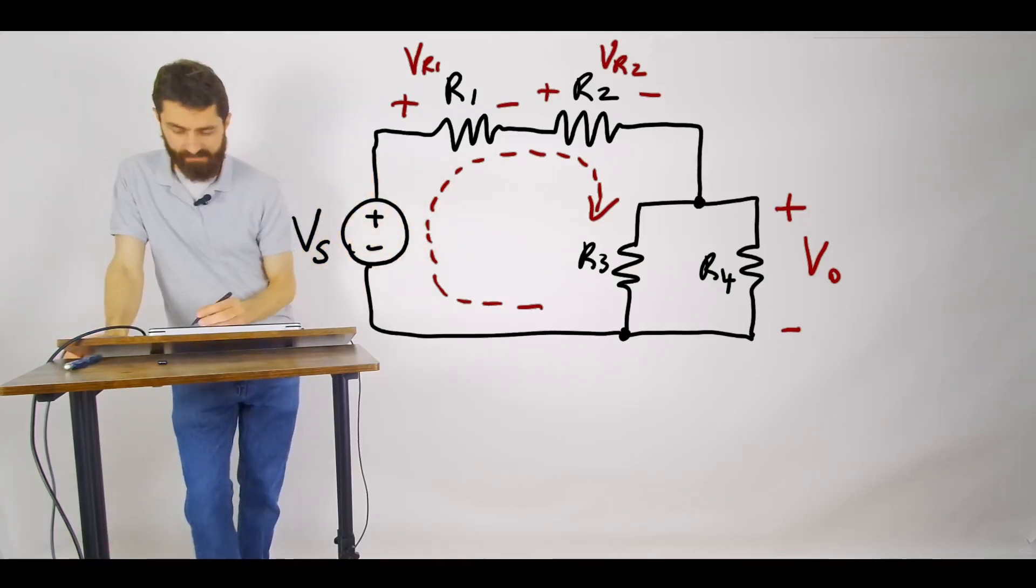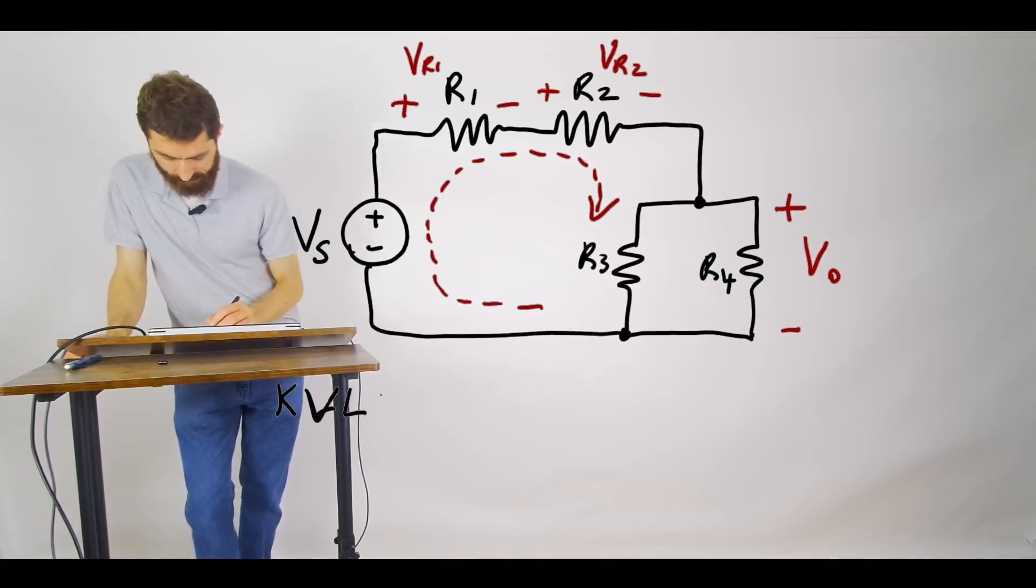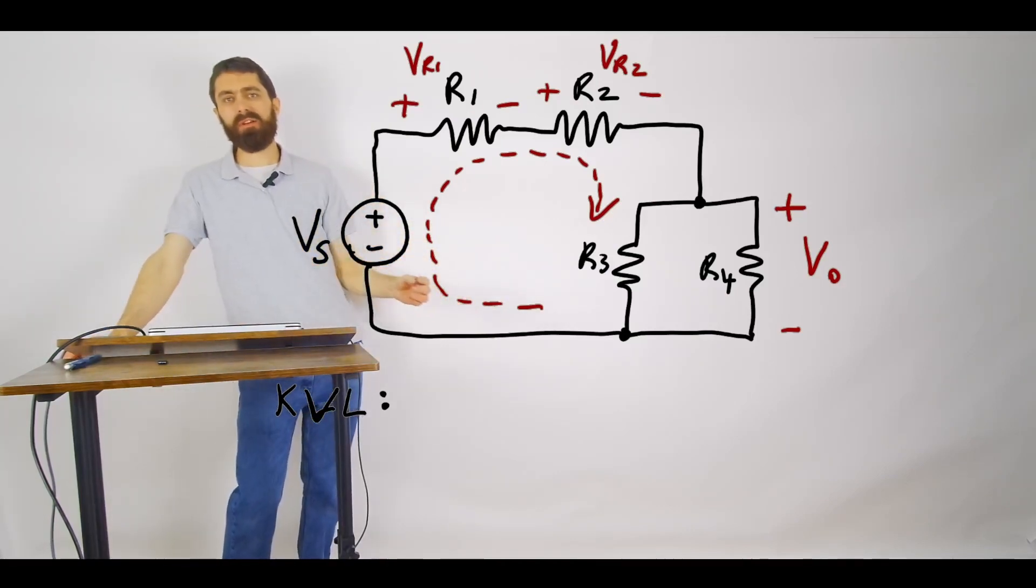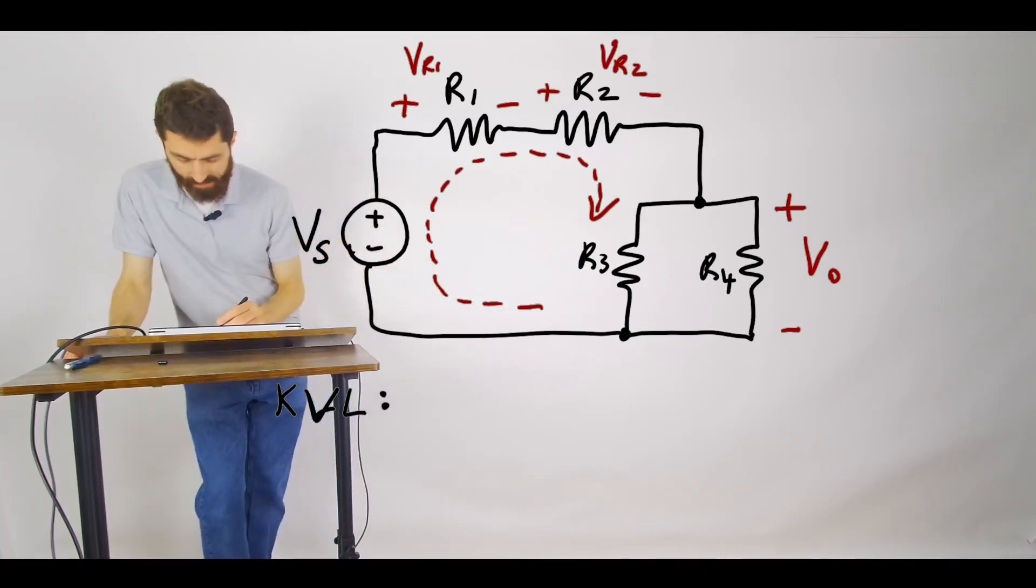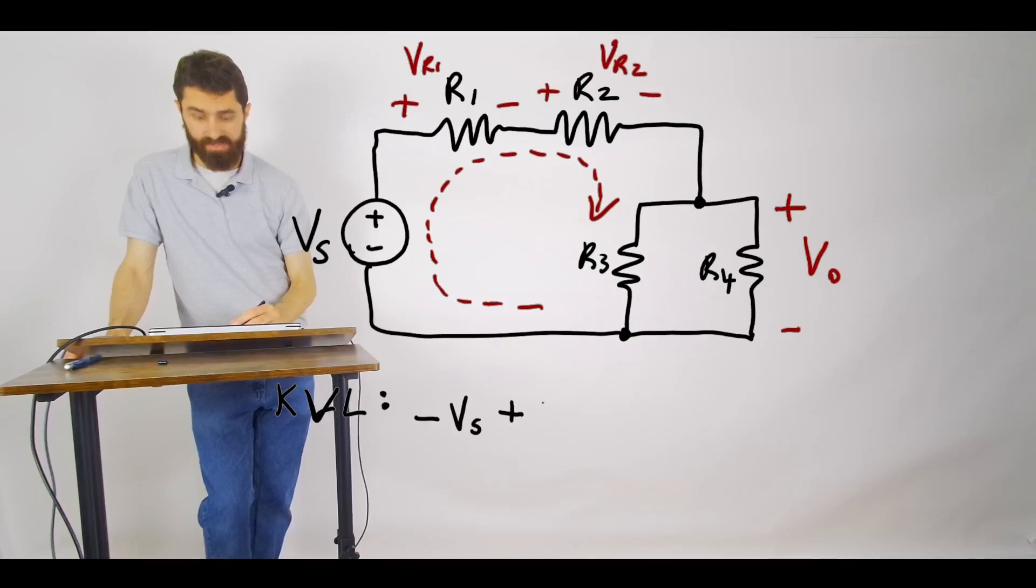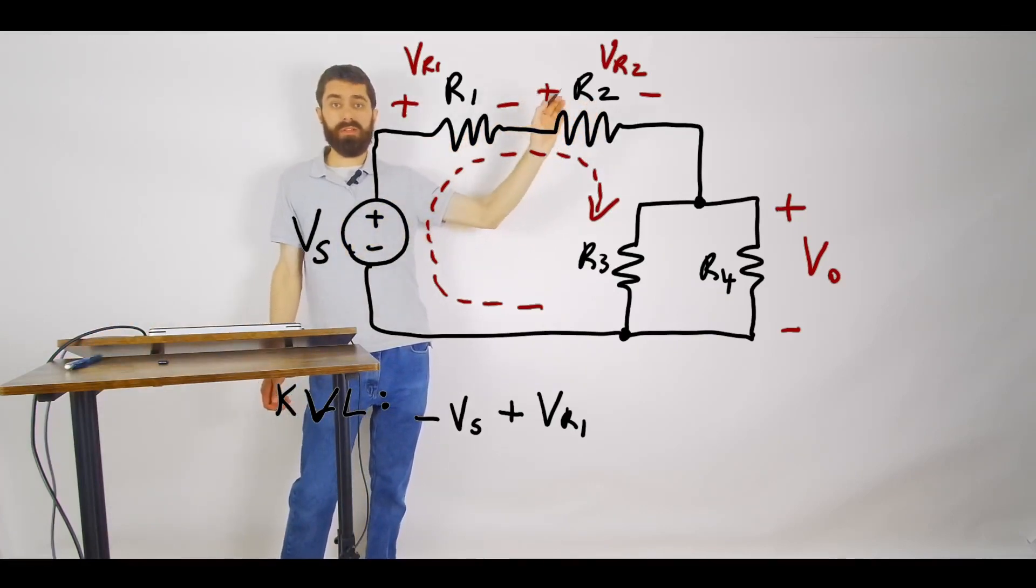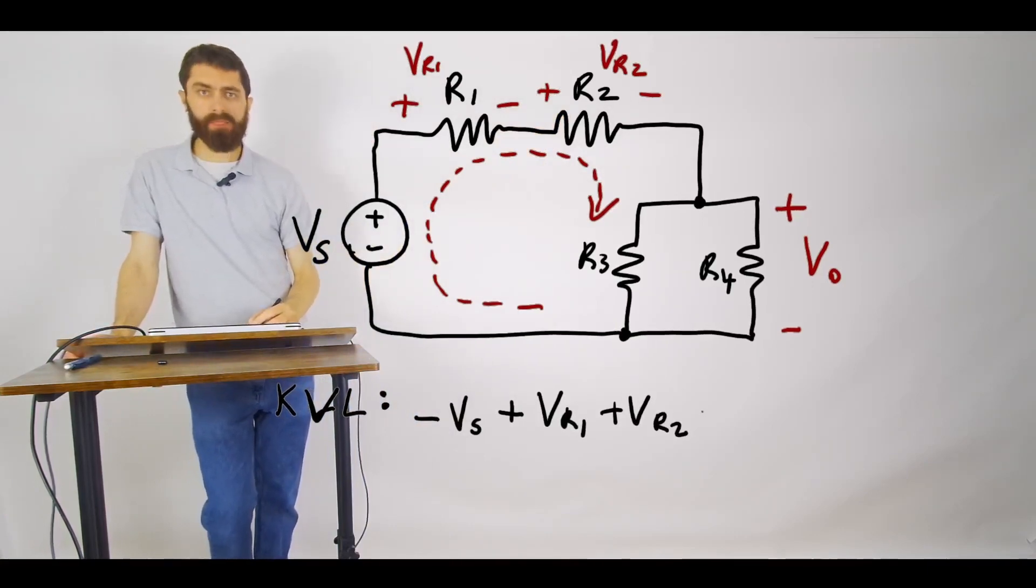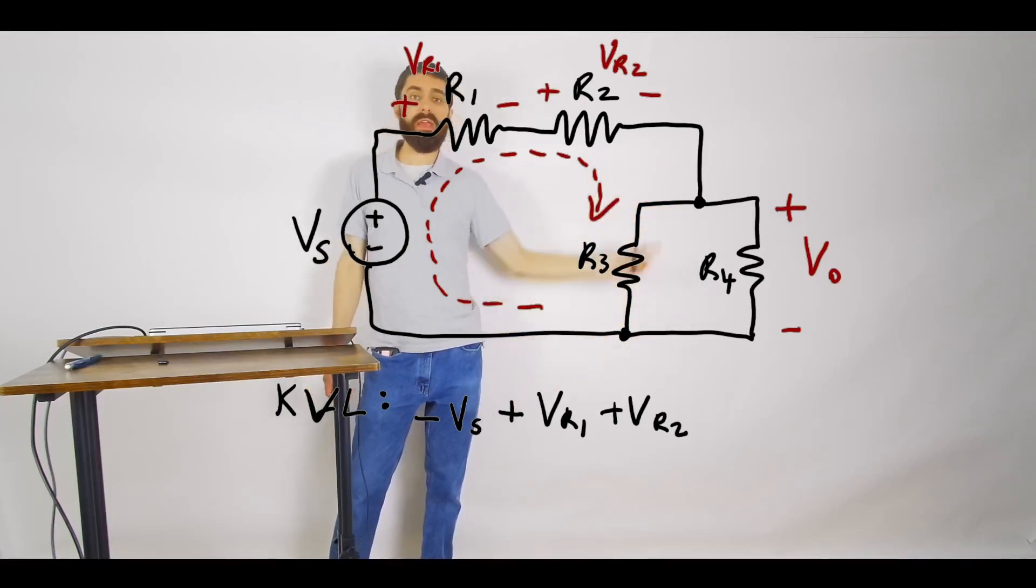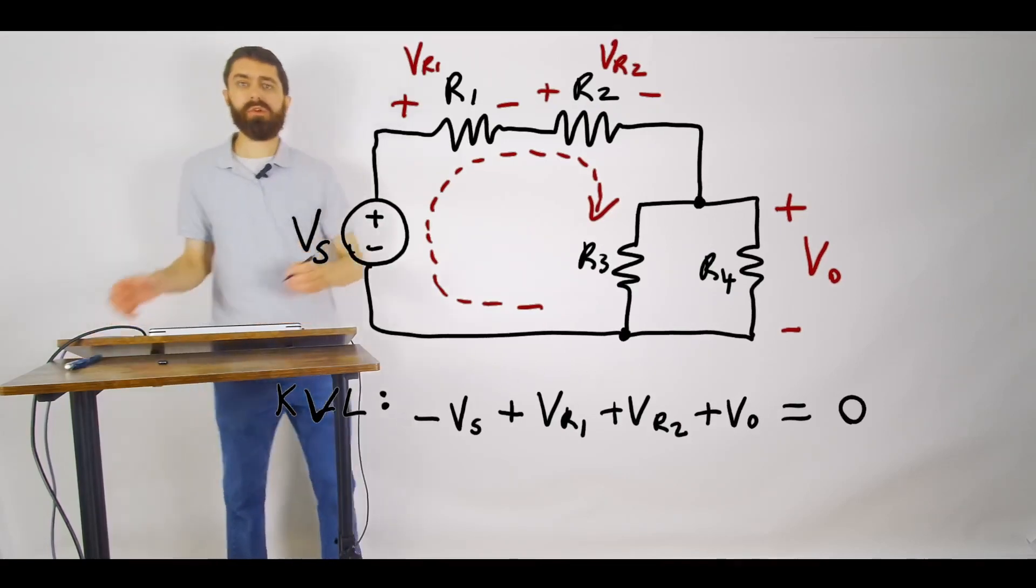So let's go ahead and create a KVL equation here. So we're going to go around clockwise, we could go the other way too but I prefer clockwise. So we're going around, what do we hit first? Minus sign, so that will be minus Vs, and then we have a plus sign first here so that'll be plus VR1, and then going through R1 we then hit VR2 and then we hit a plus sign there so it's plus VR2, and then we come over to V0 here across this parallel combination here and we hit the plus sign first so that will be plus V0 and that's all equal to zero.